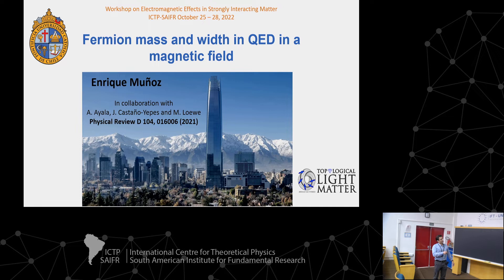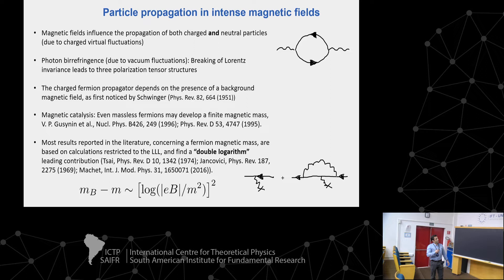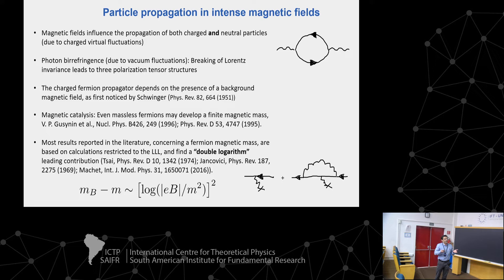This is a picture of Santiago de Chile in our last winter, where Universidad Católica, the institution I'm based at, is located. The work I will discuss today concerns a relatively basic but fundamental question about the origin of the so-called magnetic mass in fermion particles in QED, and why it is important to discuss the presence of intense magnetic fields in the propagation of particles — which can affect both charged and non-charged particles such as photons, due to quantum vacuum fluctuations.